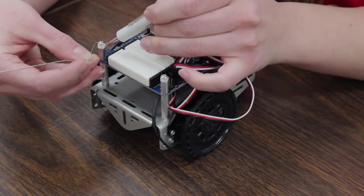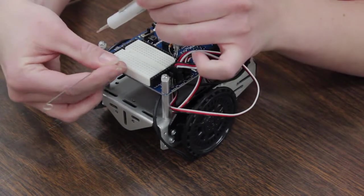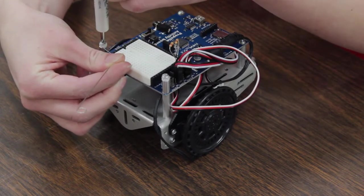So you're going to want to lift up this washer just a little bit, slide that underneath, and then screw the screw back down into place.